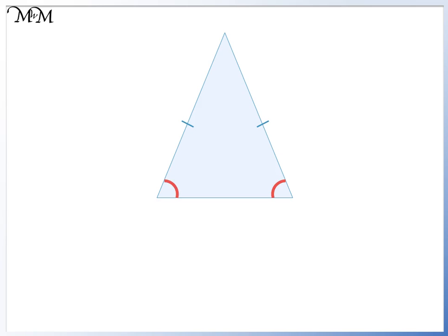So if this angle was 70 degrees, this angle must also be 70 degrees. We know that both of these angles are 70 degrees, so we can use this to find the missing angle.